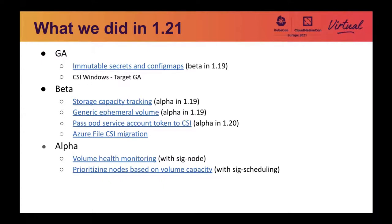We also have a generic ephemeral volumes feature moved to beta. Kubernetes provides volume plugins whose lifecycle is tied to a pod and can be used as scratch space, such as the built-in emptyDir volume type, or to load some data to a pod such as config map and secret volume types or CSI inline volumes. The generic ephemeral volumes feature allows any existing storage driver that supports dynamic provisioning to be used as an ephemeral volume. With the volume lifecycle bound to the pod, it can be used to provide scratch storage different from the root disk. All storage class parameters for volume provisioning are supported, as well as all features supported with PVCs, such as storage capacity tracking, snapshots, restore, and volume resizing.